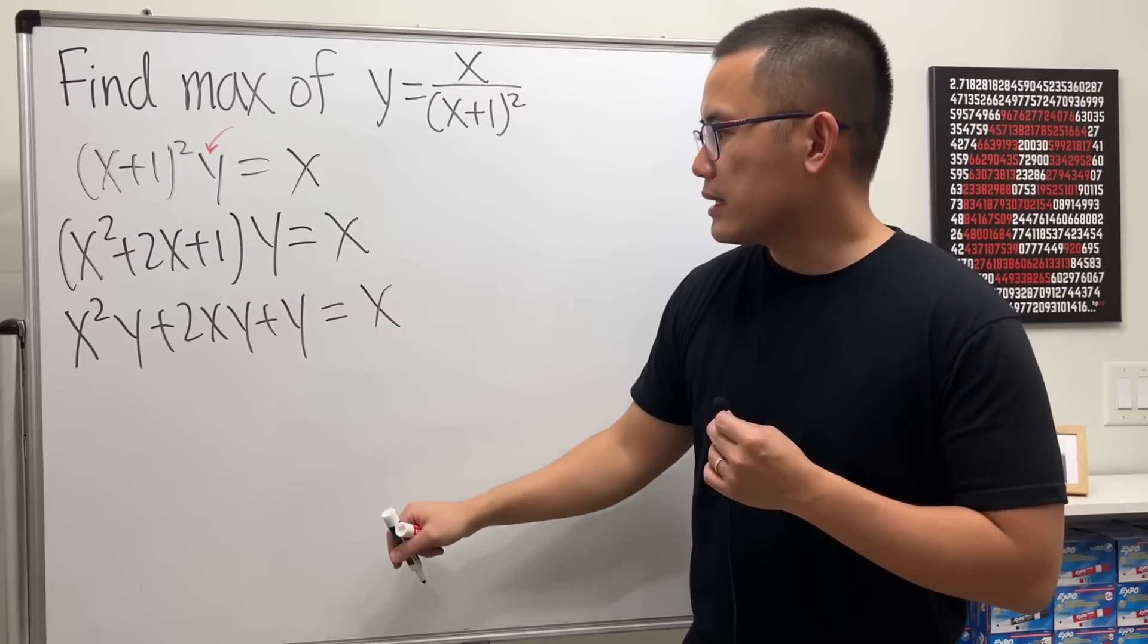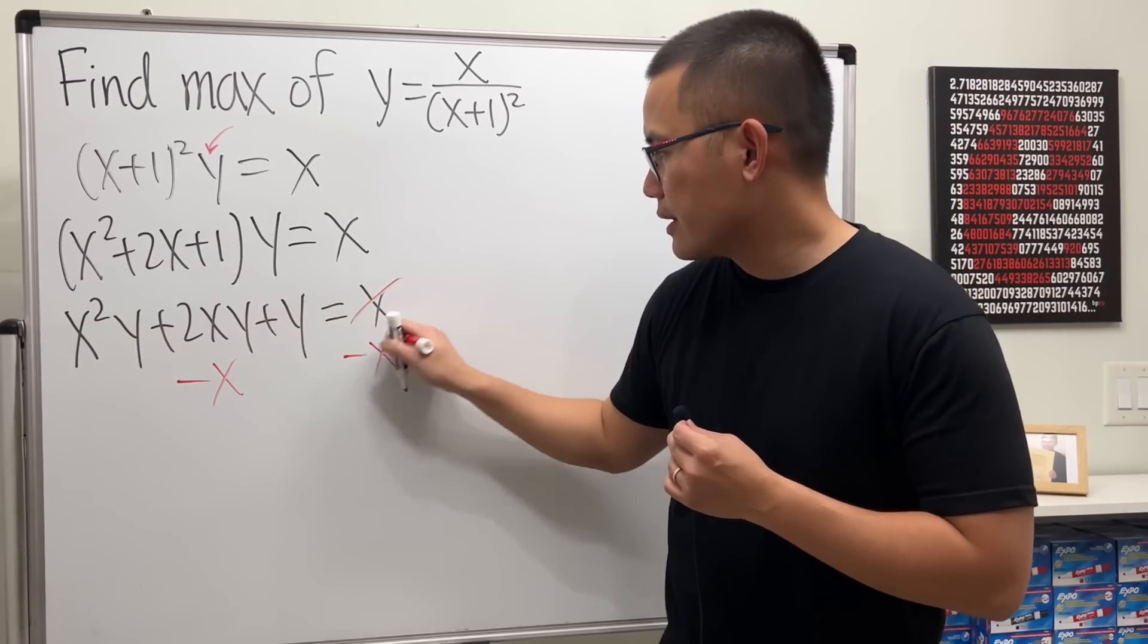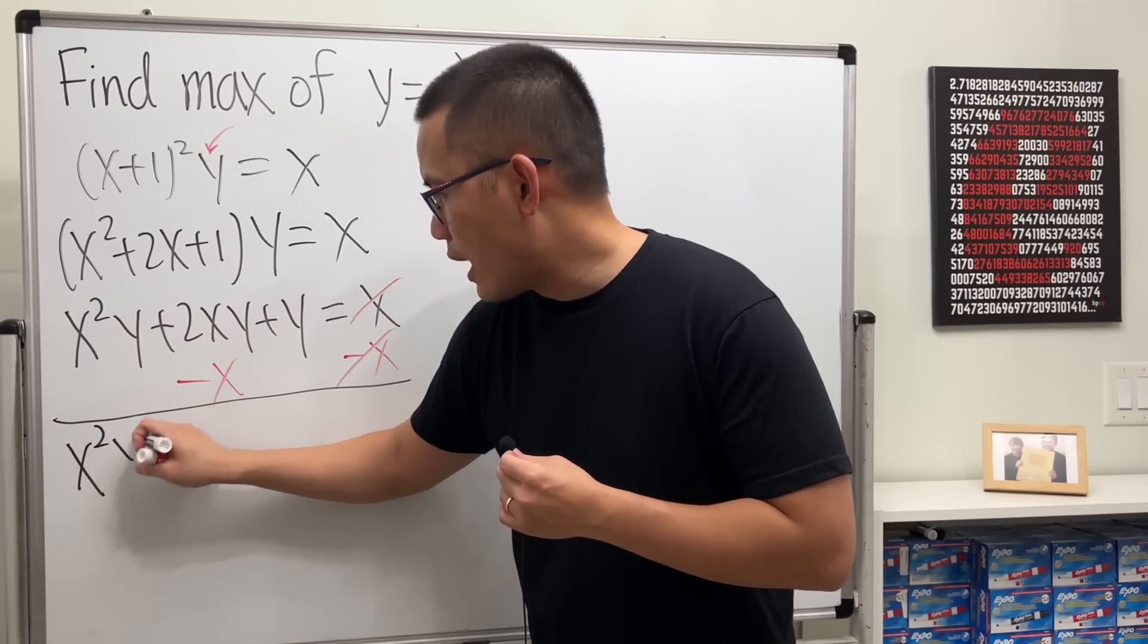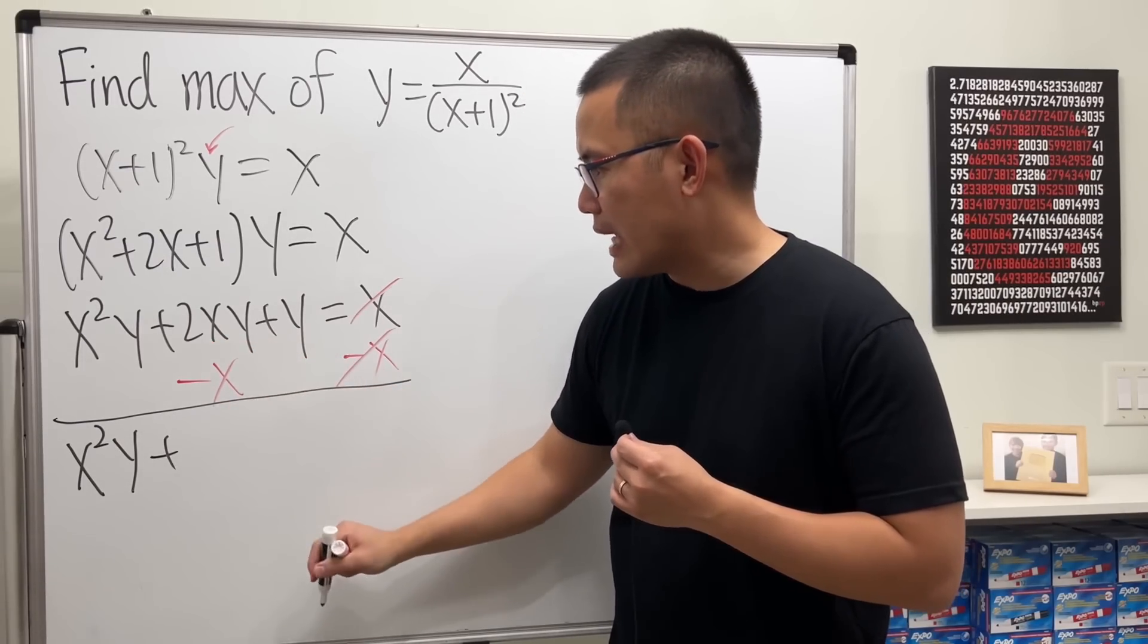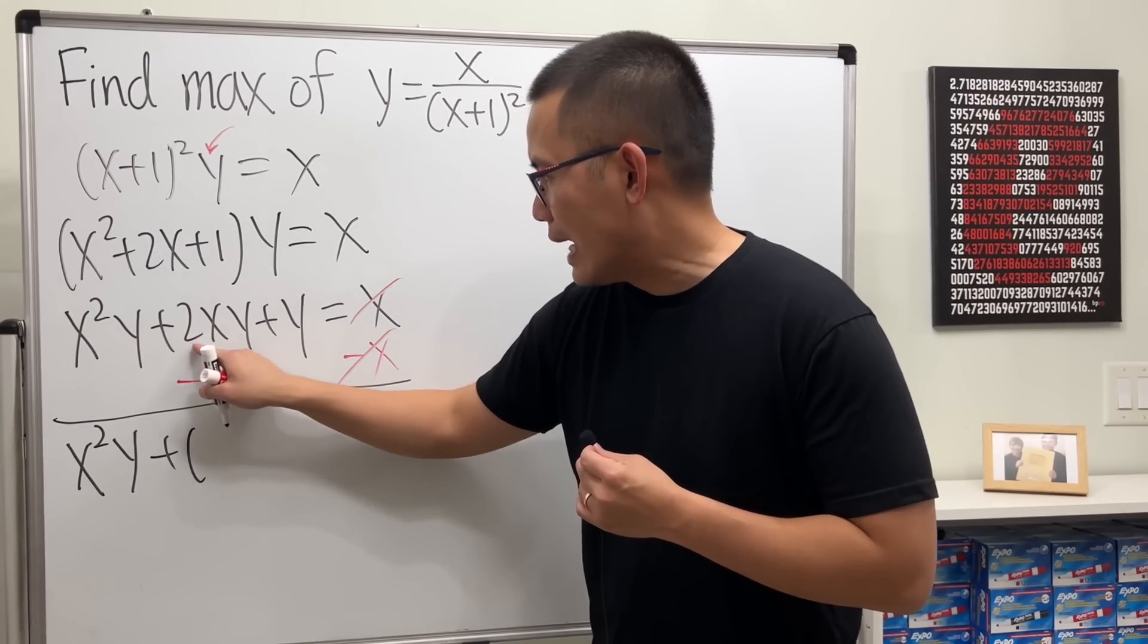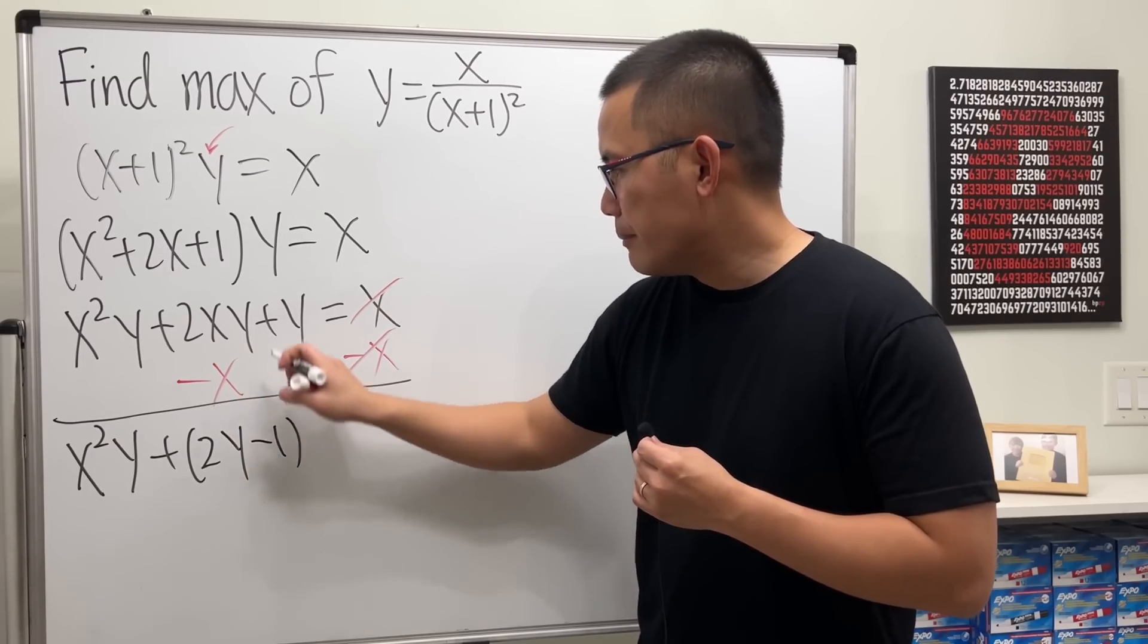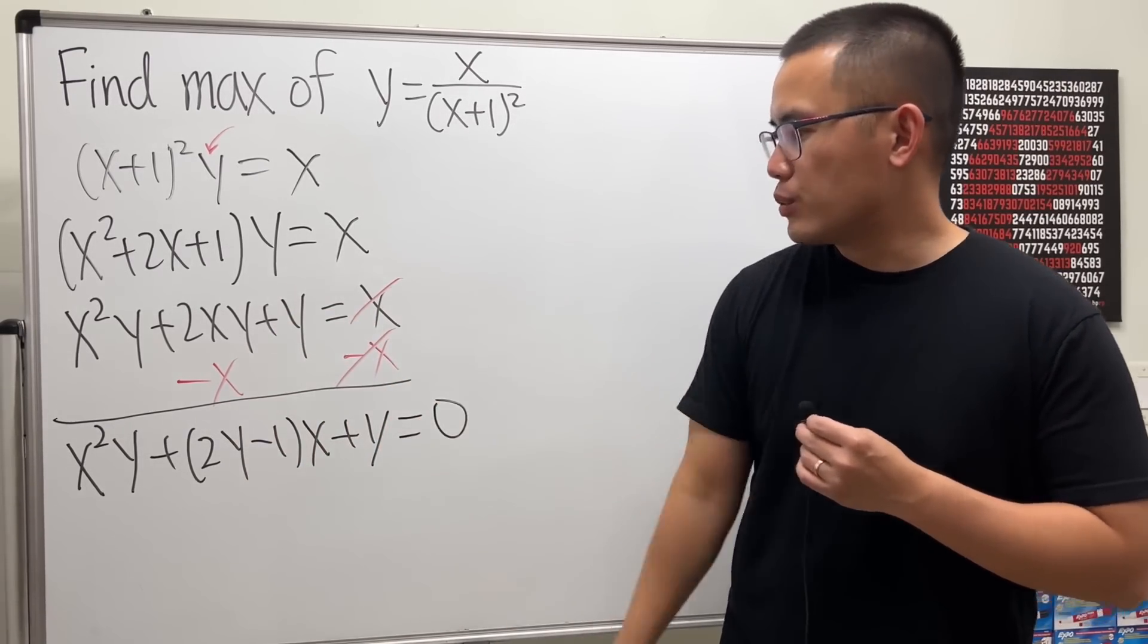Bring the x to the other side, so I will minus x here, and then minus x here. So, this is x²y plus, they both have x, so let's factor that out. So we will have 2y left, minus 1, and put the x on the outside, and then plus y, and that's equal to 0.